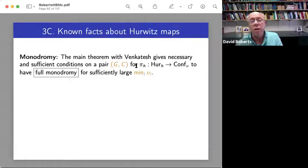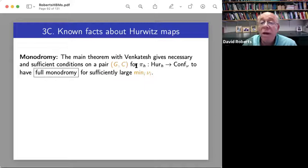All right, so here are some known facts about Hurwitz maps. I'm running through the big three again. Monodromy. So this is where the theorem of Venkatesh comes in. So the main theorem that I proved with Akshay gives necessary and sufficient conditions for this map to have full monodromy.